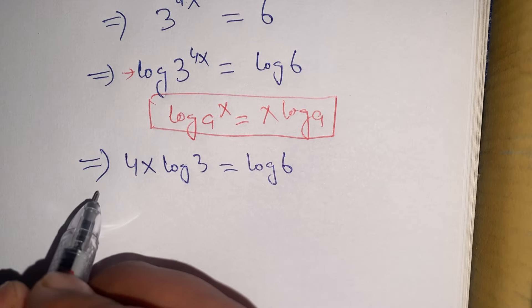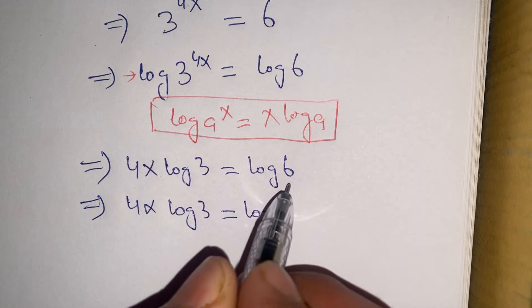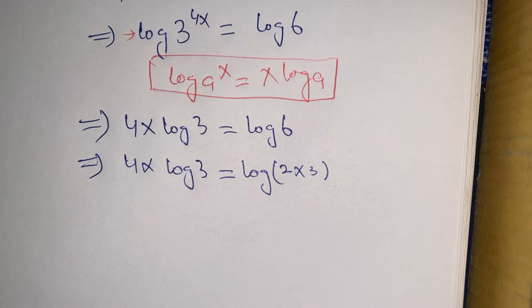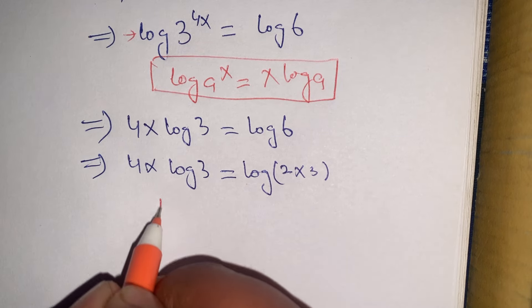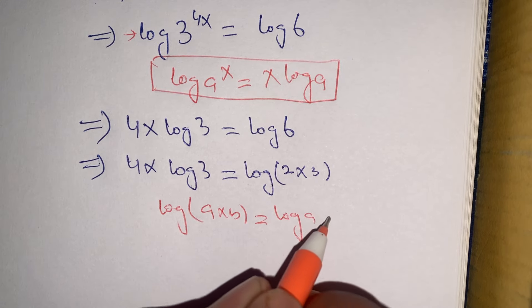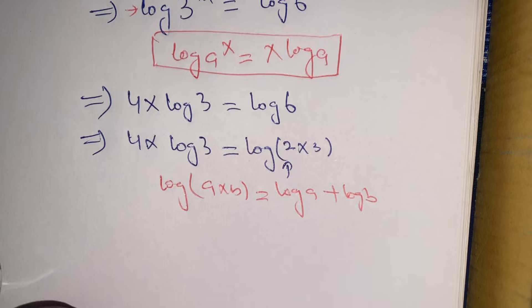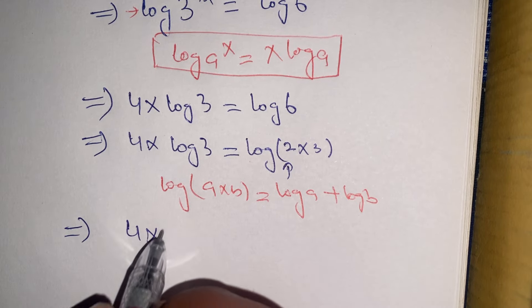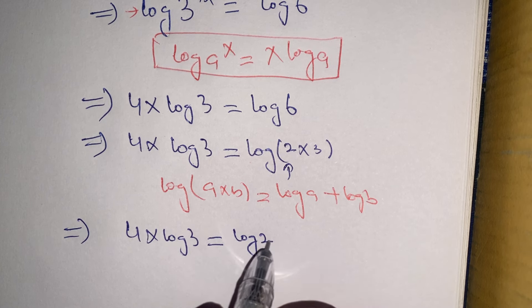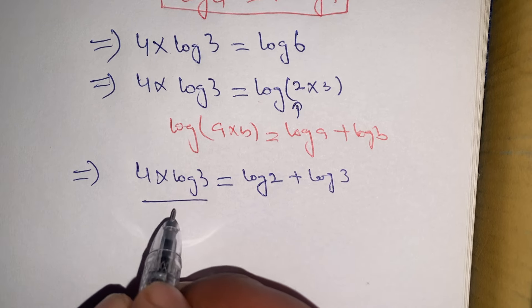In the next step, we write log 6 as log(2 times 3). Using the logarithm property log(a times b) equals log a plus log b, the right hand side becomes log 2 plus log 3. So we have: 4x times log 3 equals log 2 plus log 3. Now dividing both sides by log 3, we get 4x equals log 2 over log 3 plus 1.